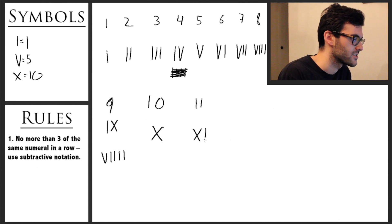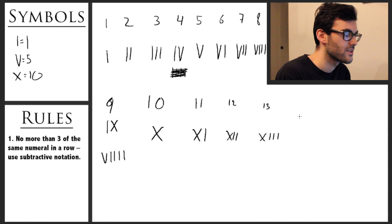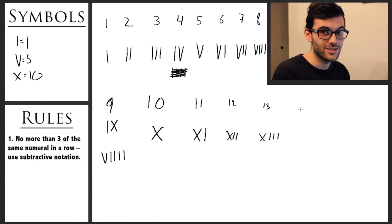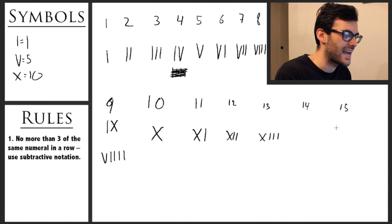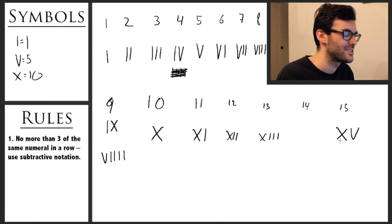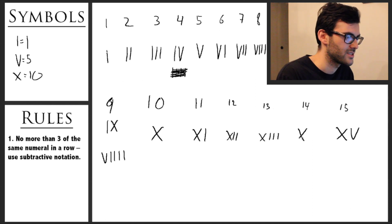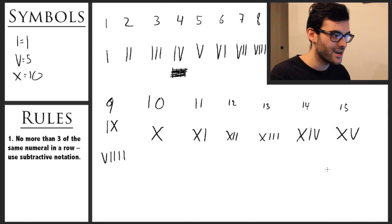So writing out a few more: 11 is XI, 12 is XII, 13 is XIII. We'll skip 14 and do 15 first — 15 is XV, ten and five. And so then 14 is going to be ten and four, and four is IV, so 14 is XIV. So this is the general pattern that we're going to be following.